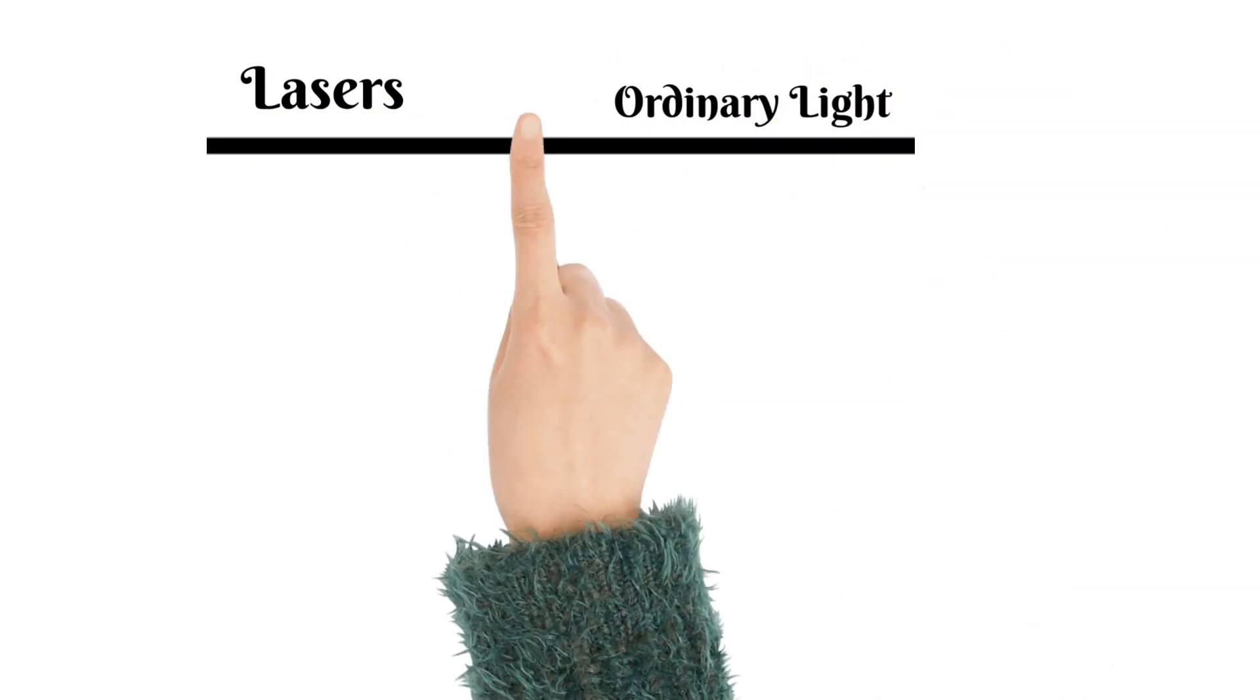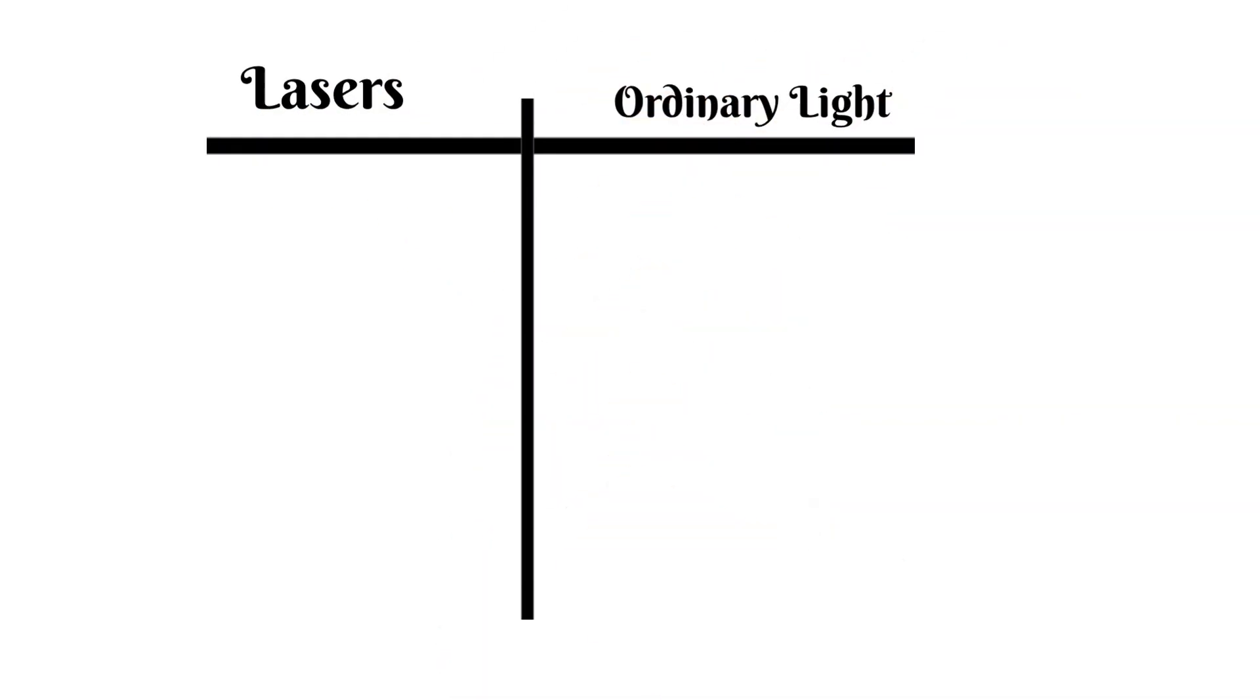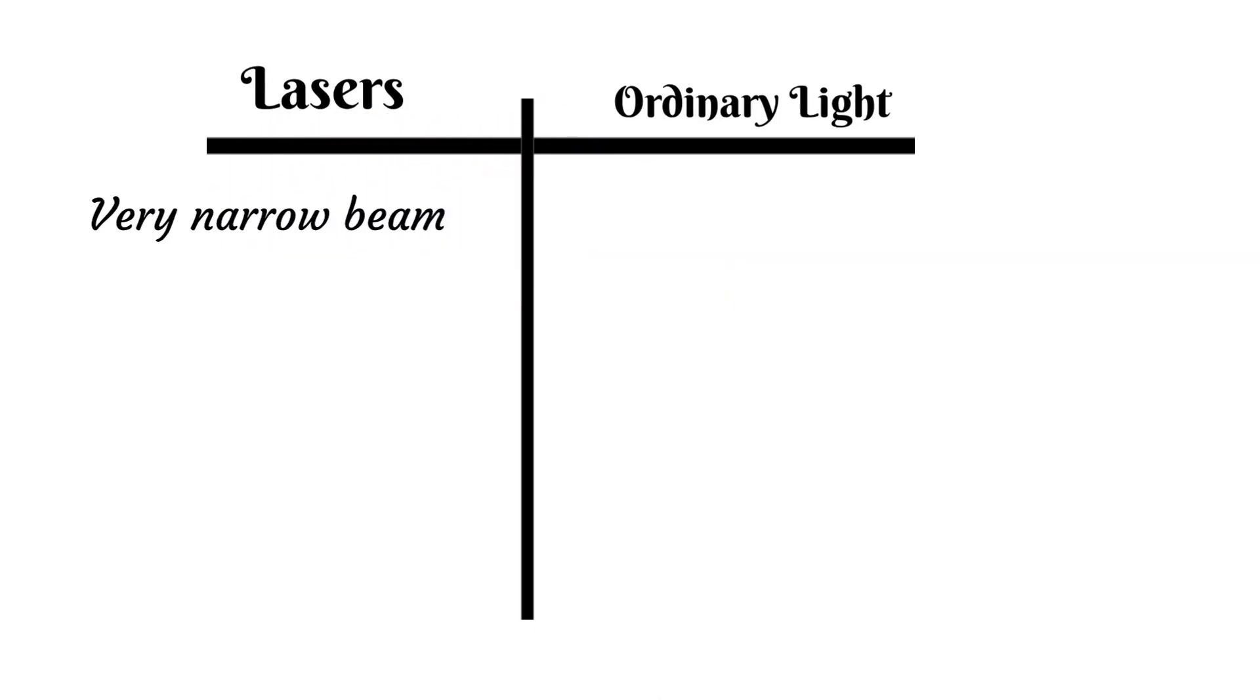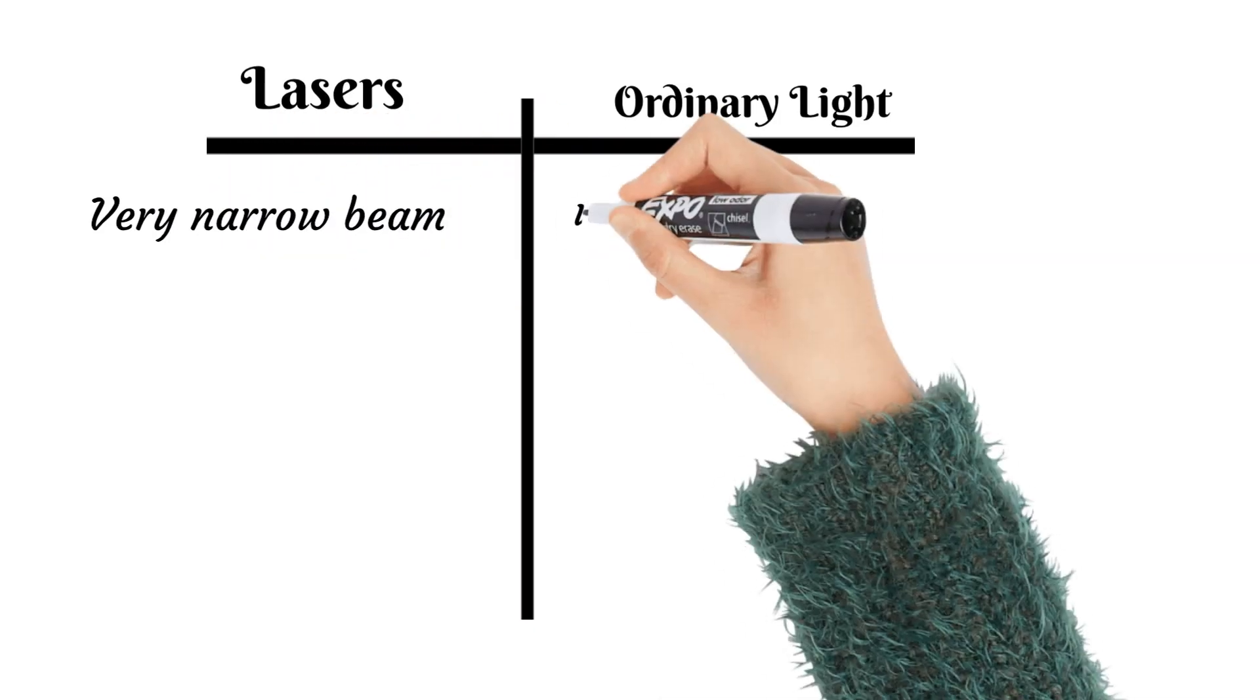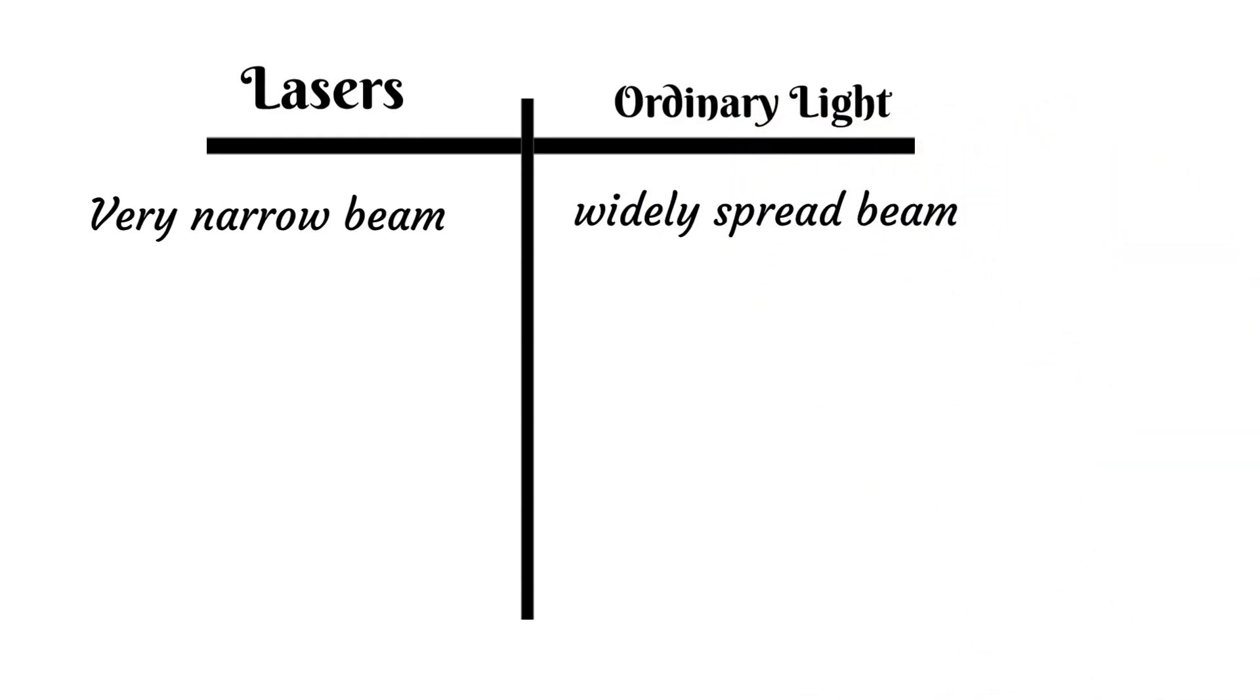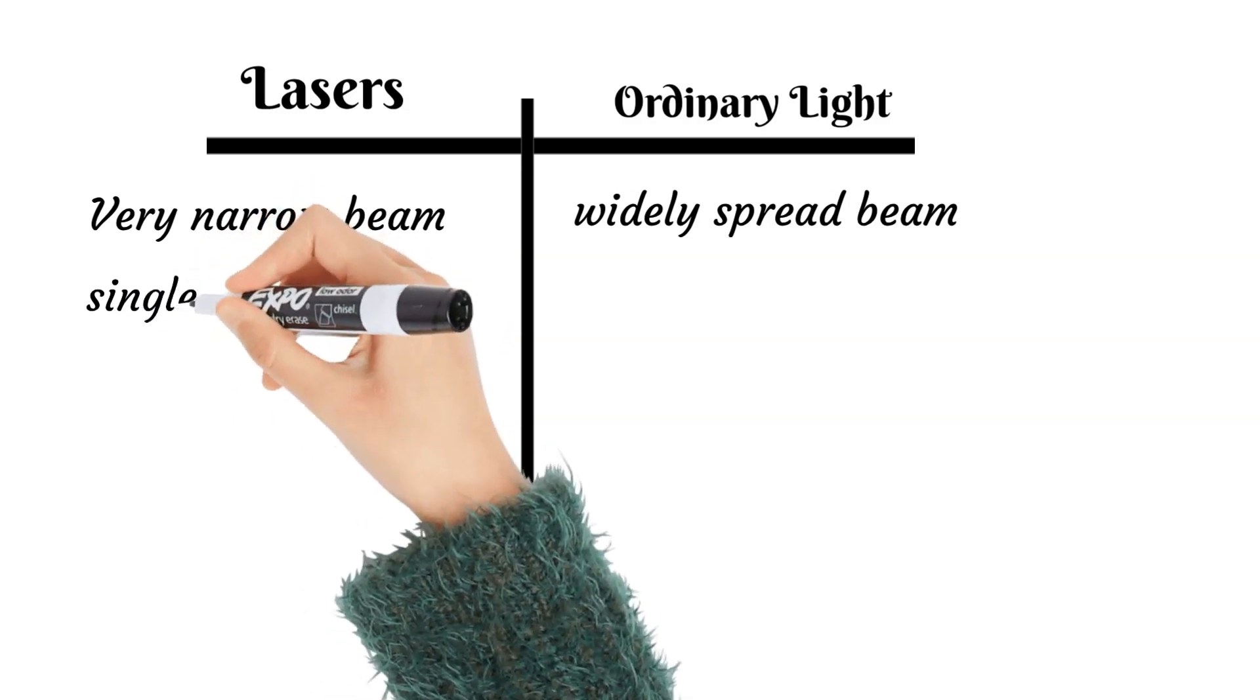Finally, let's compare laser light and ordinary light so that we'll see their differences. Number one: laser lights are very narrow beams of light, while ordinary light are widely spread beams of light that can spread over distances.